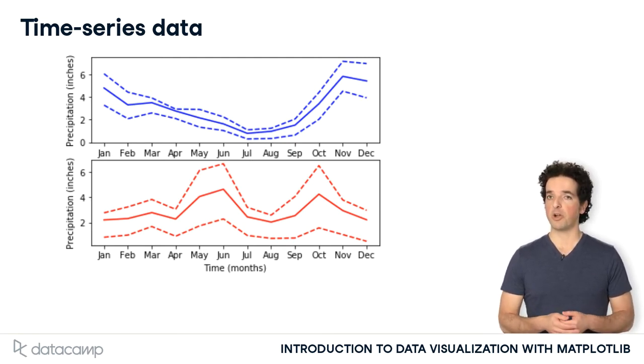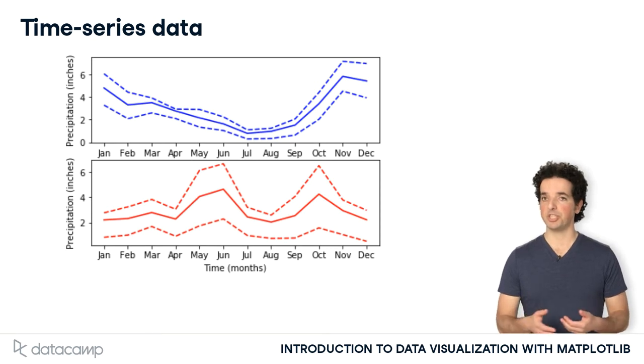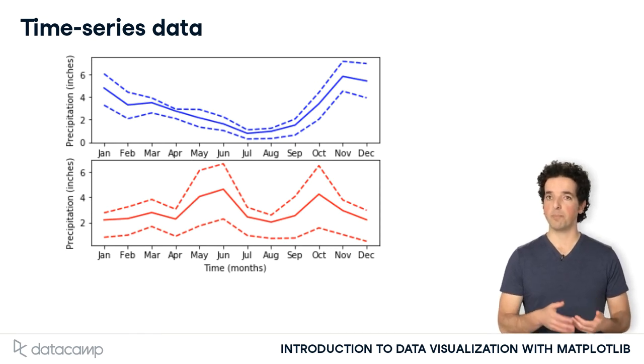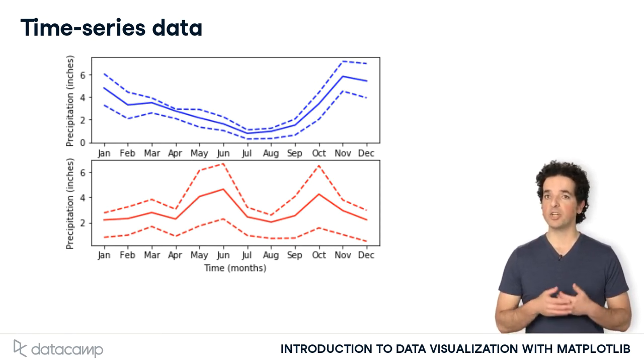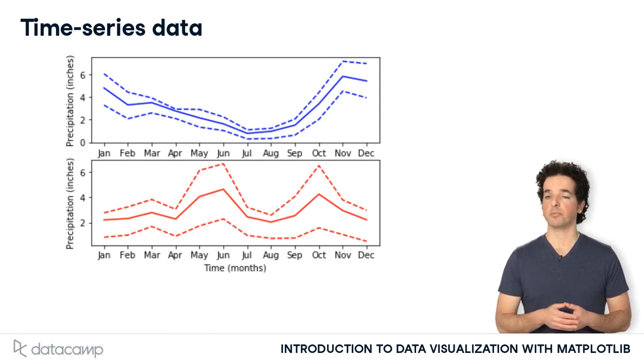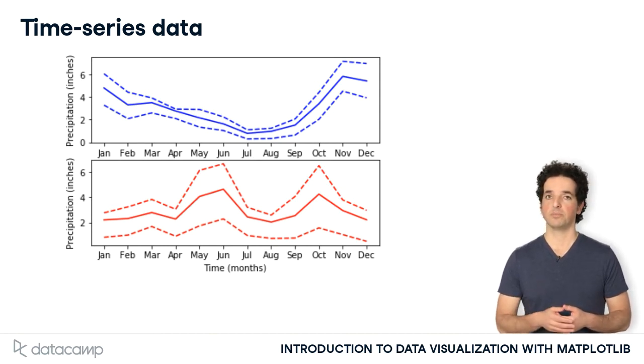Continuous variables, such as precipitation or temperatures, are organized in our data table according to a time variable — the months of the year.